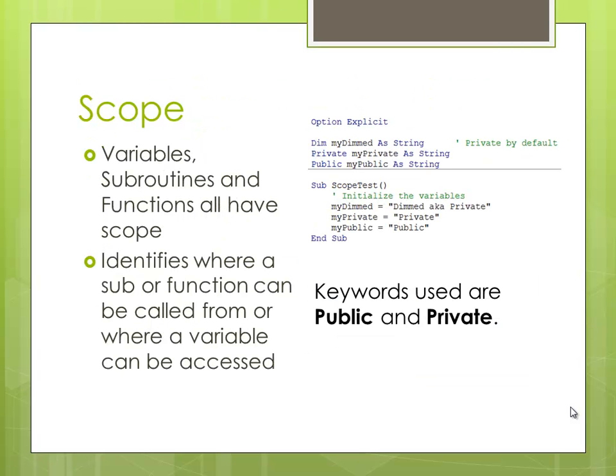The chapter also talks about scope, because we can declare variables outside of a subroutine at the module level so that they could, if they were public variables, be accessible to any module. Or if we declare them as private, or if we don't declare them at all other than indicating with the keyword dim, then they're private and are only accessible within the current module.